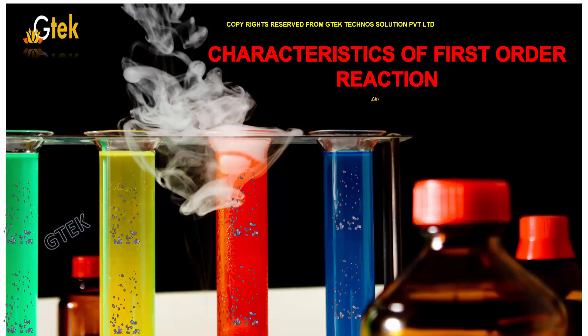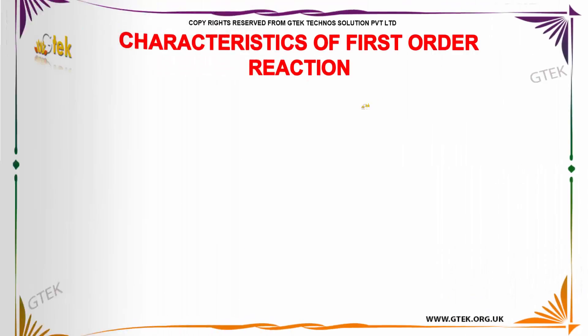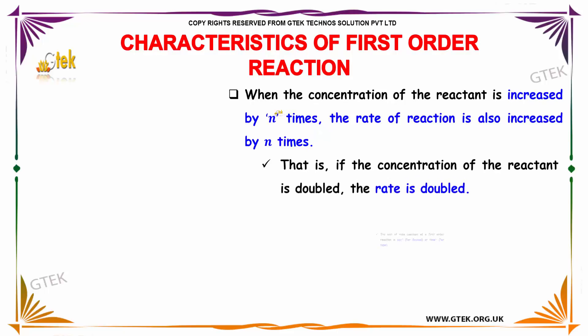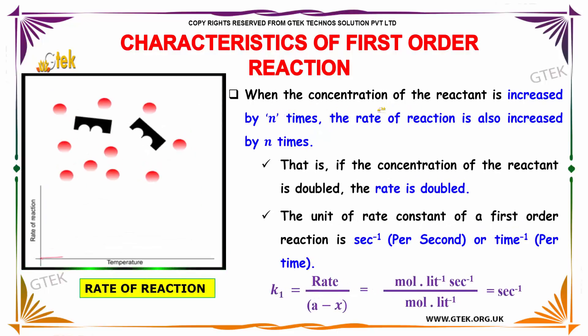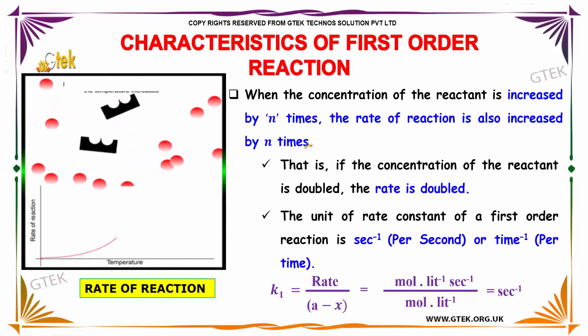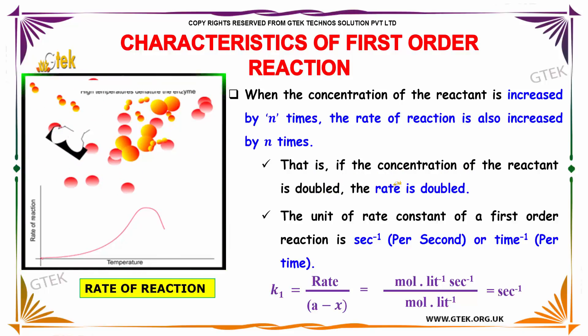On to the characteristics of a first order reaction. When the concentration of the reactant is increased by n times, the rate of the reaction is also increased by n times. That is, if the concentration of the reactant is doubled, the rate is doubled.